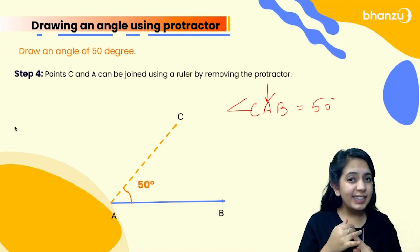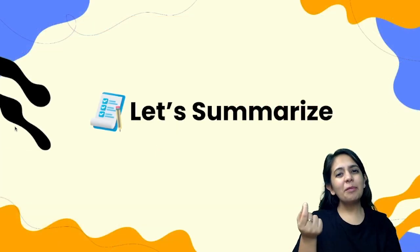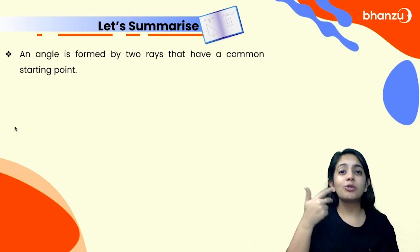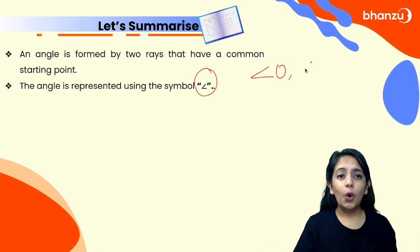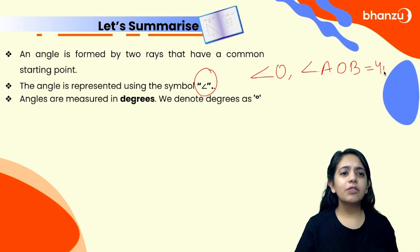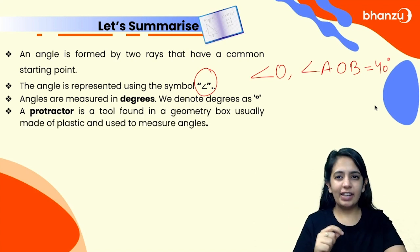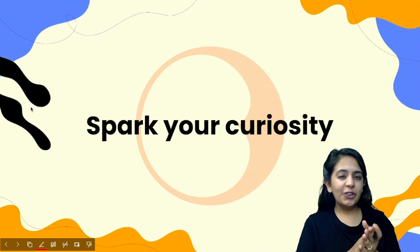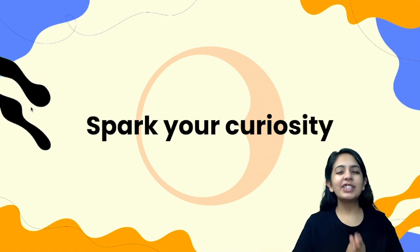Now that we have learned what an angle is, how to measure it, how to draw it, and how to represent it, let's summarize. An angle is formed whenever two rays, two line segments, or two lines have a common point. The angle is represented by the angle symbol — for example, angle O or angle AOB. Angles are measured in degrees, and the protractor is the tool used to measure and draw angles. Now it's your time to spark your curiosity — bring real-life objects and find the angles using a protractor. See you in the next session. Take care, bye-bye!